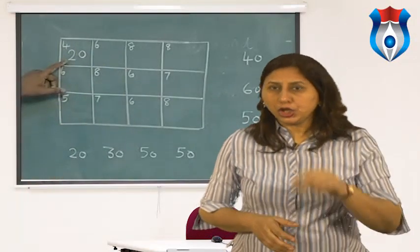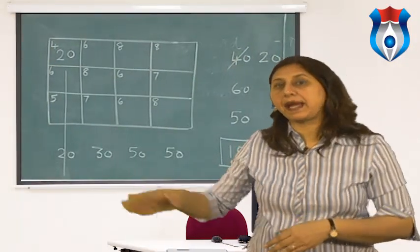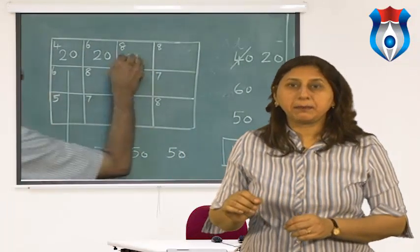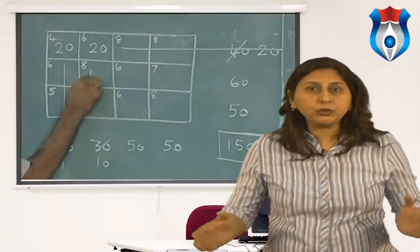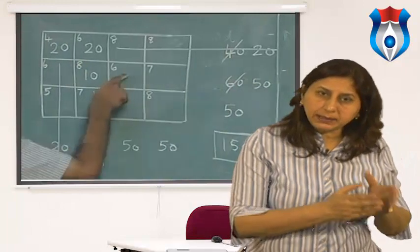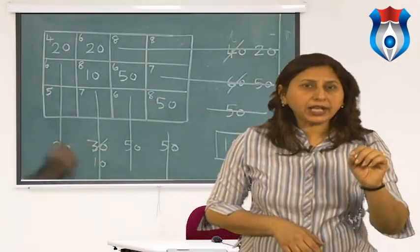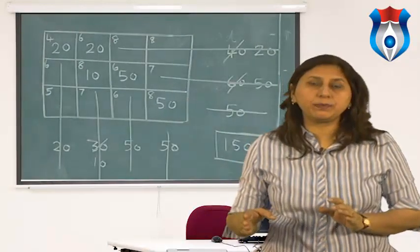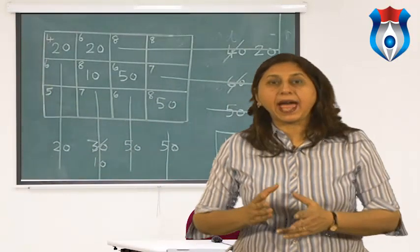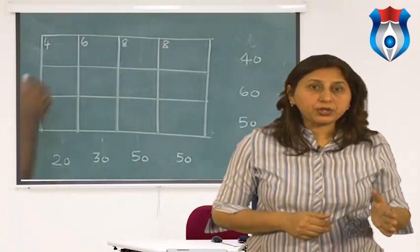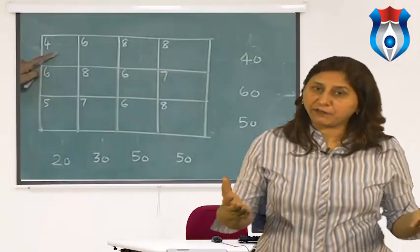For selection of the entering variable, choose the variable Xrs to enter the basis for which the net evaluation Zrs minus Crs equals max(Zij minus Cij) and is greater than zero. After identifying the entering variable Xrs, form a loop which starts at the non-basic cell RS connecting only basic cells. Such a closed path exists and is unique for any non-degenerate solution. Allocate a quantity theta alternately to the cells of the loop starting with plus theta to the entering cell; the value of theta is the minimum of allocations on cells having minus theta. Continue until all net evaluations are positive for non-basic cells.